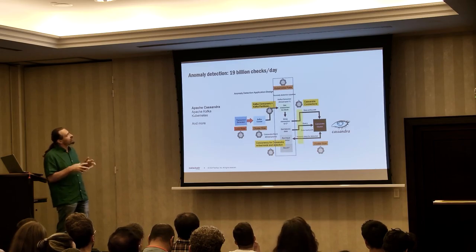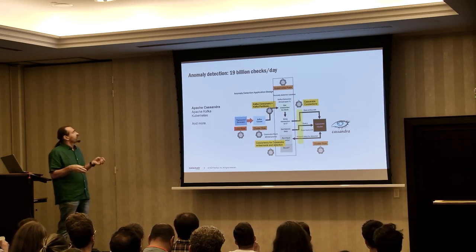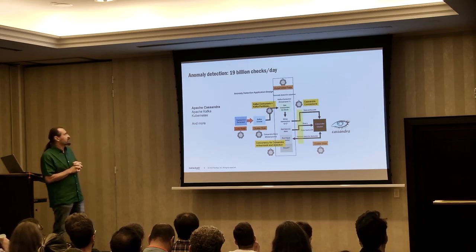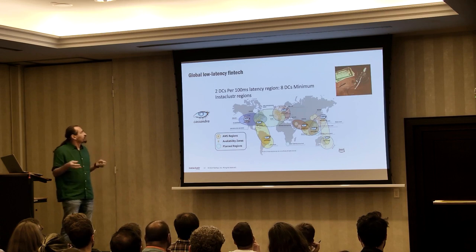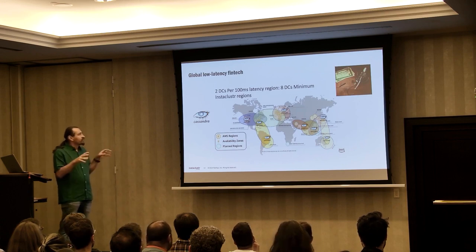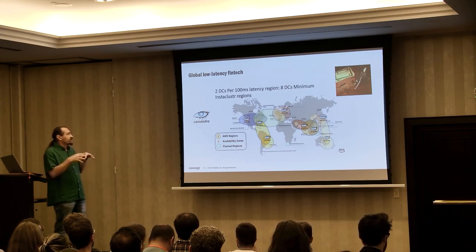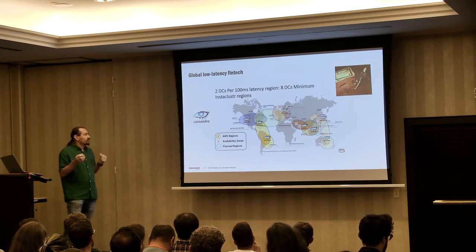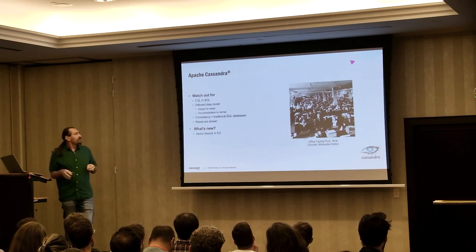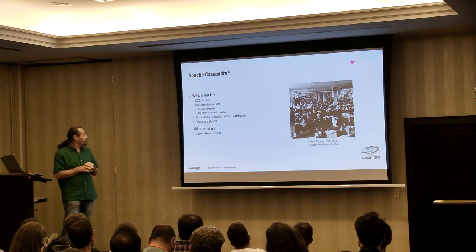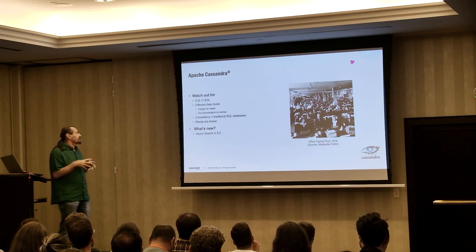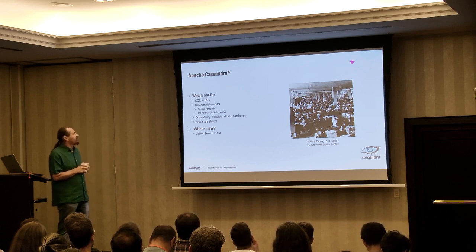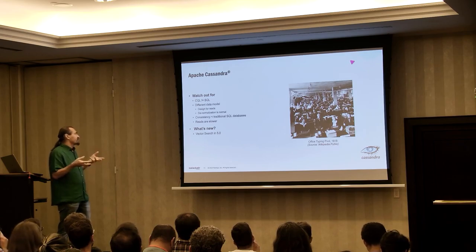Some use cases I've used it for — the talk I gave in Berlin — was an anomaly detection system that achieved 19 billion anomaly checks a day, combining Cassandra, Kafka, and Kubernetes. I also did a demo of a low-latency fintech system with redundancy across multiple geo locations. Things to watch out for: it has its own query language CQL, which is not SQL. It has a pretty different data model — you have to design for reads, and denormalization of tables is normal. Consistency is somewhat less than traditional SQL databases, and reads are slower because it's optimized for writes.